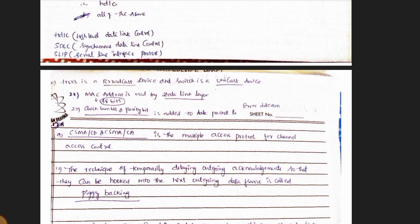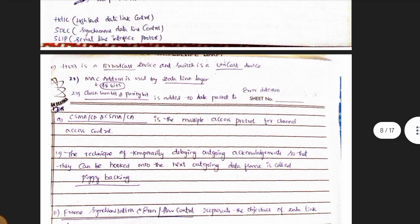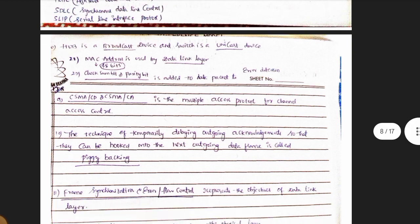Hub is a broadcast device and switch is a unicast device — this is a repeat question. The MAC address is 48 bits. MAC address belongs to the data link layer.